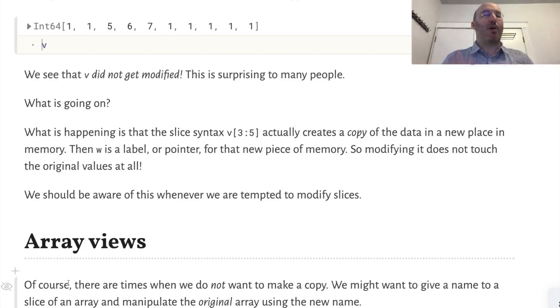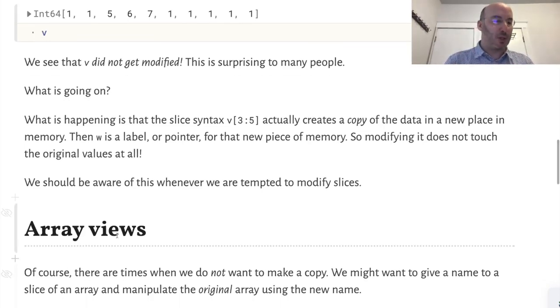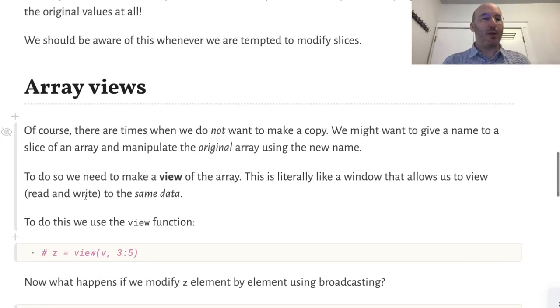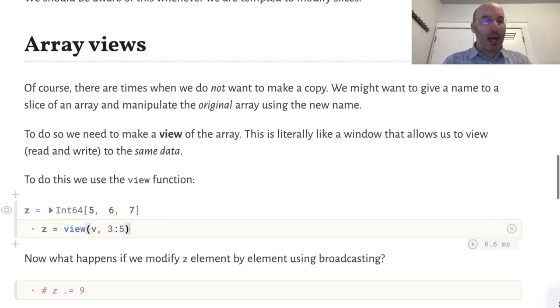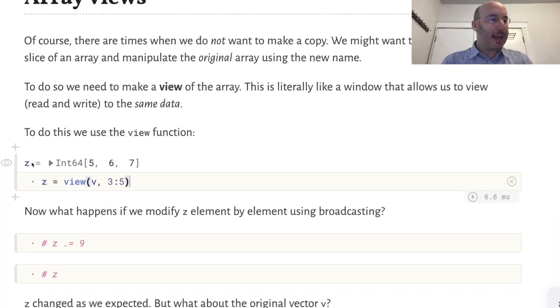But there might be a case where we want to use this new name to modify the original array. We have to do something different and make what's called a view. We use this view function. I pass in the array object that I want to make a view of and the same range. It looks from this display the same, but we've created an object of a different type.